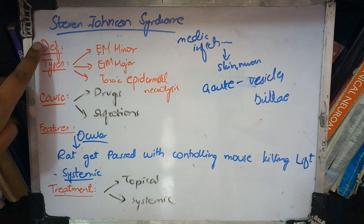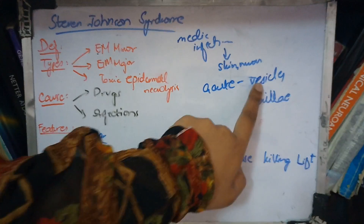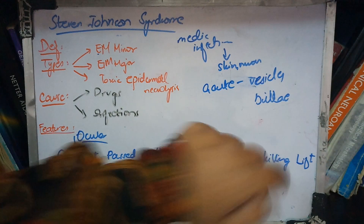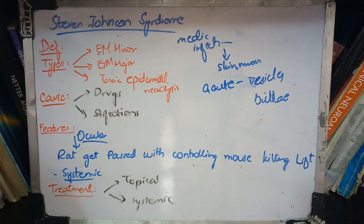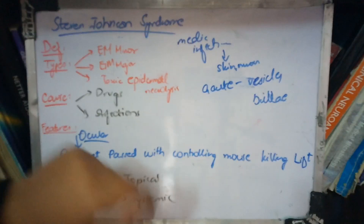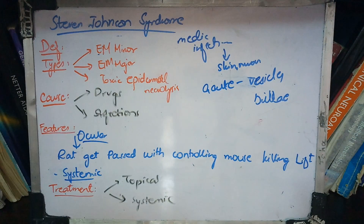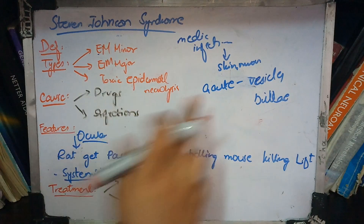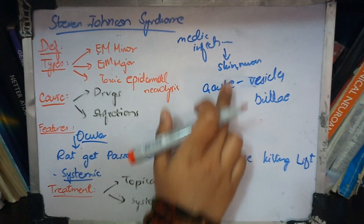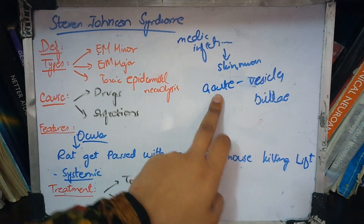Let's start with the definition. Stevens-Johnson Syndrome is an acute condition in which vesicles and bullae are formed on skin and mucous membranes, due to either any medication or infection. So the definition is: acute vesicle-bullous formation of skin and mucous membranes due to any medication or infection.